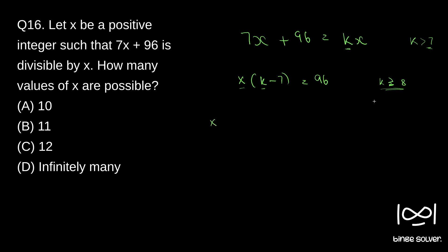Now, 96 divided by 3 gives 32 into 3, and 32 is 8 into 4 into 3. So the prime factorization of 96 is 2 into 2 into 2 into 2 into 2 into 2 into 2 into 3, meaning 96 equals 2 to the power 5 times 3.